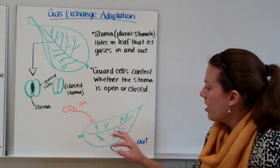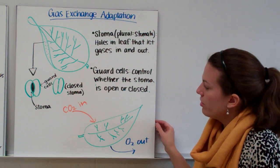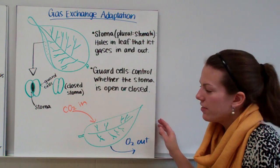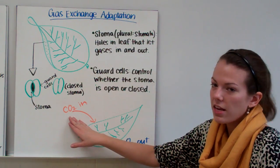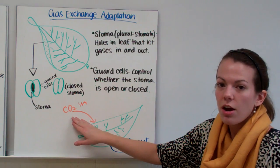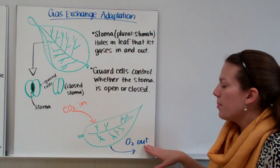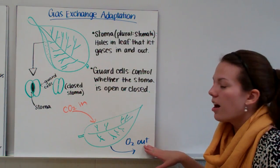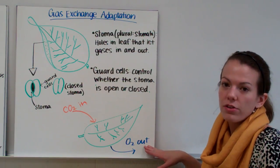Now just as a refresher, our stoma are used for moving gases in and out of a cell. So the gas that the plants want to take in for photosynthesis is carbon dioxide. And the gas that plants want to release is oxygen, which is a byproduct of photosynthesis.